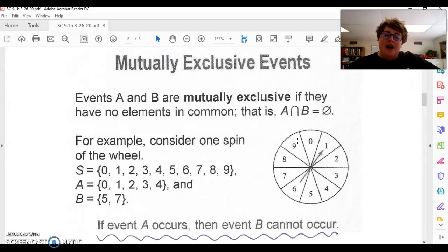So if event A is hitting 0 to 4 and event B is hitting a 5 and a 7, there are no common elements in A and B. So a 5 doesn't exist in A, a 7 doesn't exist in A, and vice versa. So if event A occurs, then event B cannot occur.